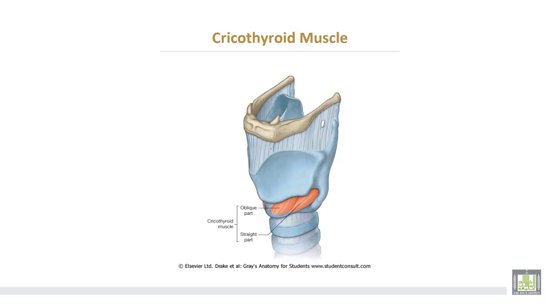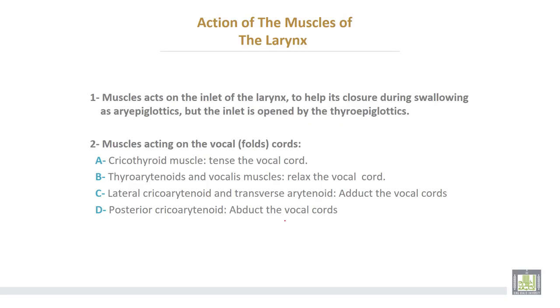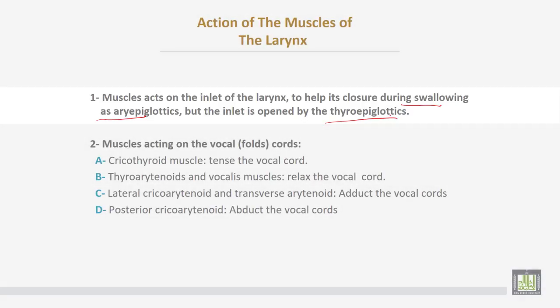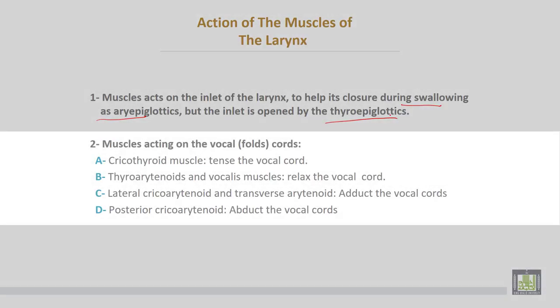This is the larynx — the skeleton of the larynx — showing the thyroid cartilage, cricoid cartilage, and the cricothyroid muscle, which is the only intrinsic muscle lying outside the larynx. Regarding actions: the muscles acting on the inlet of the larynx help with its closure during swallowing, as with the aryepiglottic muscles, while the inlet is opened by the thyroepiglottic muscles.